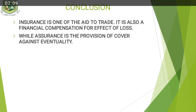Why assurance? Assurance is the provision of cover against any eventuality. Assurance deals with only life. People assure their life in case of eventuality — in case they die, their children will be covered with their life insurance policy.